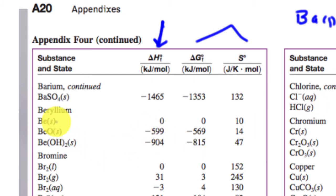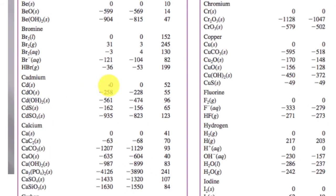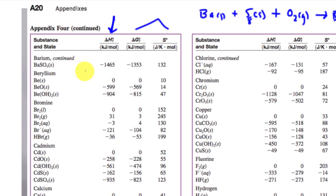Looking at the table: beryllium is zero, bromine is zero. Bromine appears in gas, liquid, and aqueous forms, but the elemental state — the most stable version — is the one with a value of zero. Cadmium's most stable state is also zero. So if you want to know the stable states of elements, look for the ones with zeros. For hydrogen, H₂ — the diatomic version — is more stable than hydrogen by itself. This chart is a standard thermodynamic functions table.